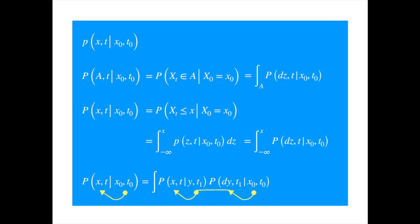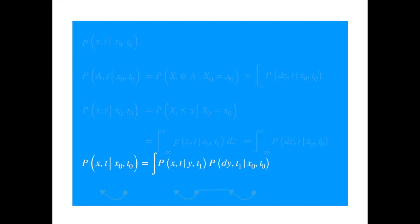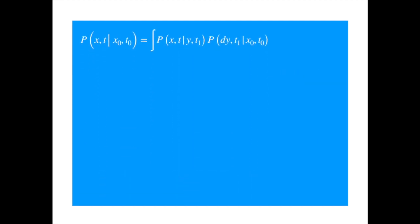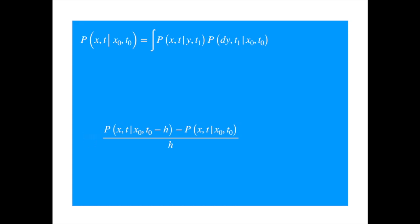For the derivation of the backward PDE, we are interested in the time derivative of the probability with respect to the initial variable t₀. So we need to determine how the probability changes per time unit as we shift t₀ infinitesimally. This is in the sense of h going to zero, but we will suppress the limit for now and bring it back when we are ready to put it to use. Now we need to simplify the expressions in the numerator.